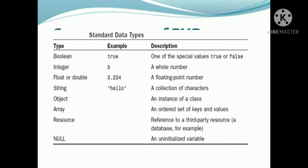For boolean, we have two possible values — true or false. For integer, we use all whole numbers. For floating or double, we use decimal point numbers. If we have a collection of characters, we choose the string data type. For an instance of a class, we choose the object data type. For an ordered set of values or key-value pairs, we choose array. For a file or external reference, we choose resource. For uninitialized variables, we choose null.